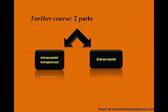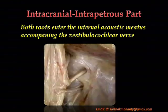The further course of the nerve is divided into two parts: up to the styloid process it is the intracranial and intrapetrous part, and beyond the styloid process it is the extracranial part. Now for the intracranial intrapetrous part.